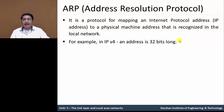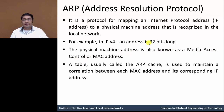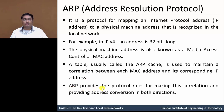For example, in IP version 4, the IP address is 32 bits long, and the physical machine address is also known as a MAC address, which stands for media access control. The mapping of these two addresses is done by this protocol. A table, usually called an ARP cache, is used to maintain a correlation between each MAC address and its corresponding IP address. ARP provides protocol rules for making this correlation and providing address conversion in both directions: MAC to IP and IP to MAC address.